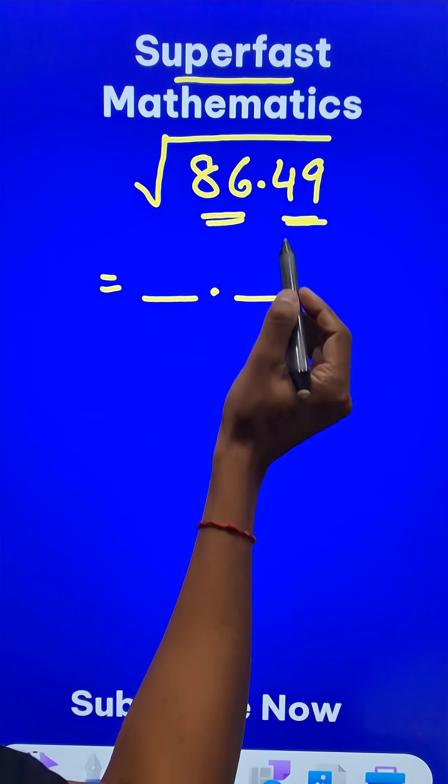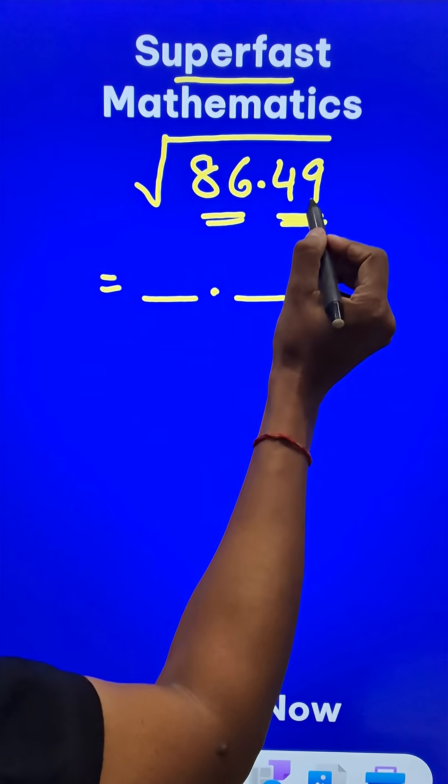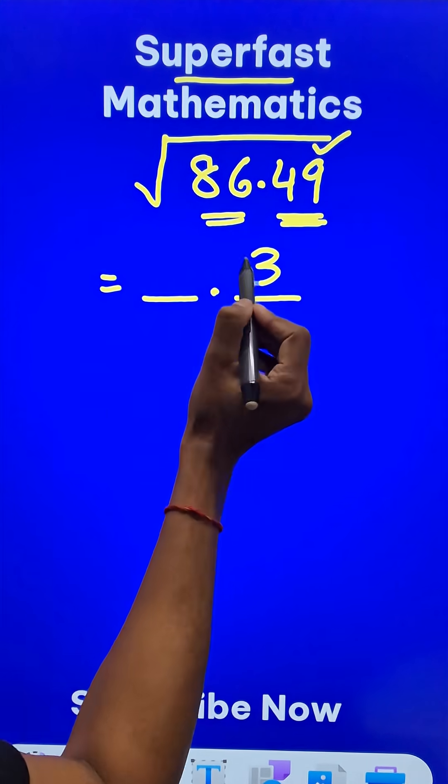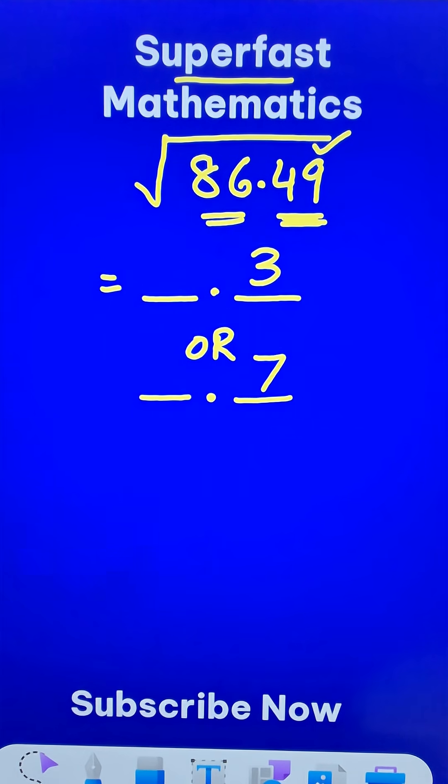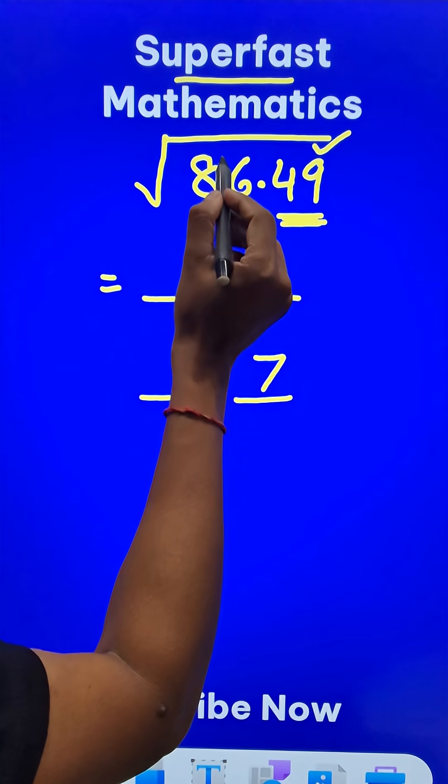Now what is the digit after decimal? Since this doublet 49 is ending in 9, 3 square is 9, or we can have another option 7 square is 49. So my answer either ends in 3 or in 7.